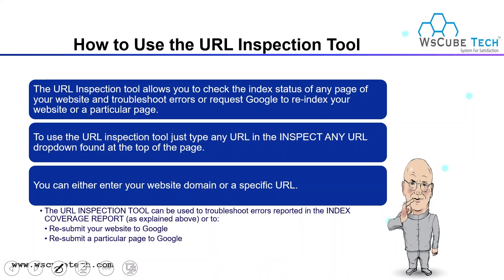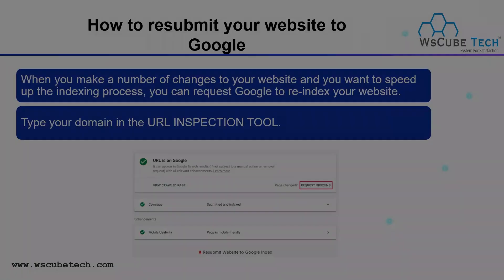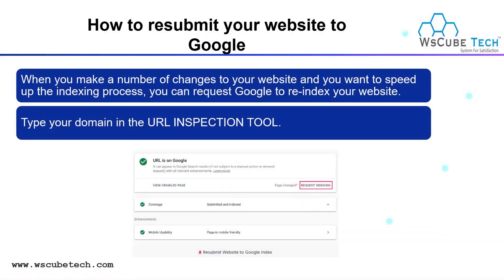How to use the URL inspection tool: URL inspection is a tool which allows you to check the index status of pages on your website and troubleshoot errors or request Google to re-index your website, as we previously demonstrated. To use the URL inspection tool, just type any URL into the inspection tool. You can either enter your website domain or a specific URL. It can be used to troubleshoot errors recorded in the index coverage report and resubmit your website or a particular page to Google.